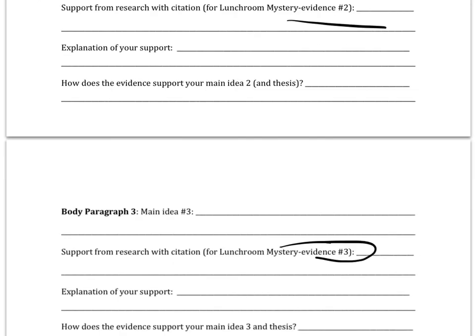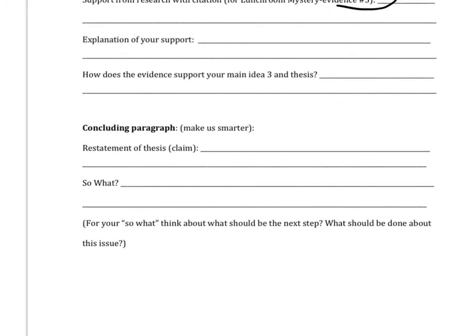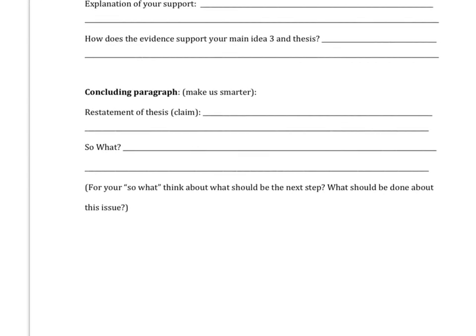Then you end with a conclusion paragraph where you restate your claim — that Customer C killed Fannin. And then the 'so what'? For the 'so what,' think about what's the next step. What does it mean that we've accused Customer C?